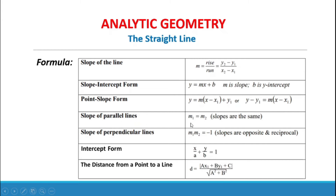Slope of parallel lines: M₁ equals M₂ — slopes are the same value. Slope of perpendicular lines: M₁ times M₂ equals negative 1, or M₂ equals negative 1 over M₁ — slopes are opposite and reciprocal. Intercept form: X over A plus Y over B equals 1. Distance from a point to a line: D equals the absolute value of AX₁ plus BY₁ plus C over the square root of A squared plus B squared.